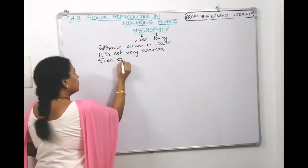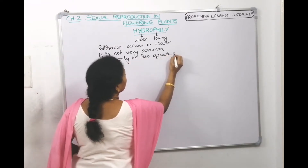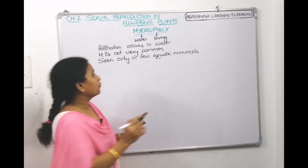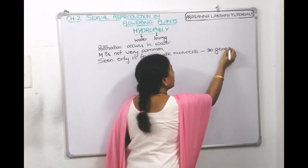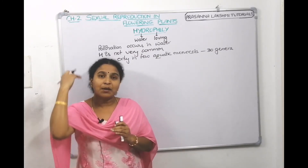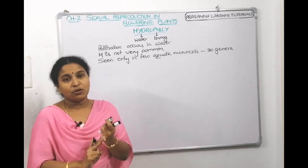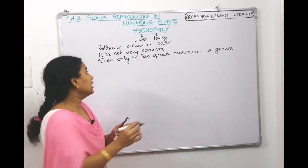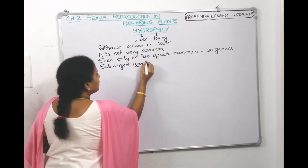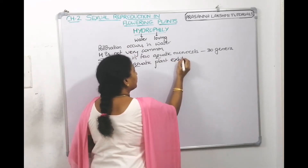Hydrophily is not very common. It is seen only in a few aquatic monocots — approximately 30 genera of aquatic plants exhibit hydrophily. And that too, not the plants which are flowering above the level of the water; mostly submerged plants go with hydrophily.